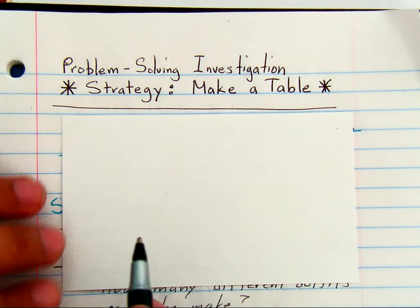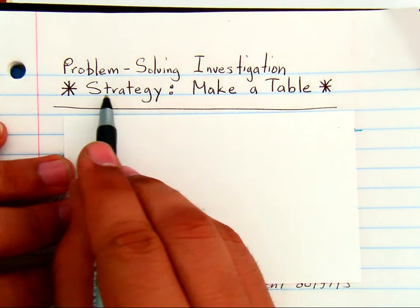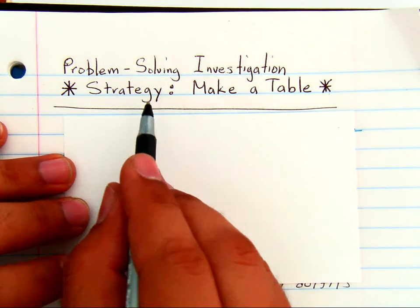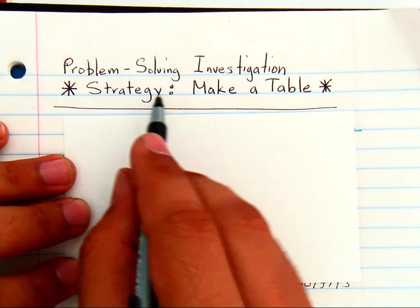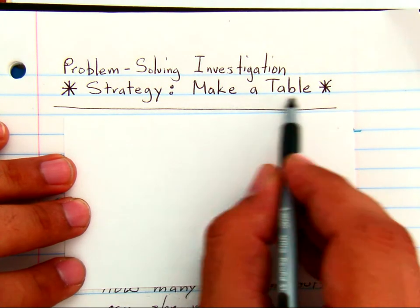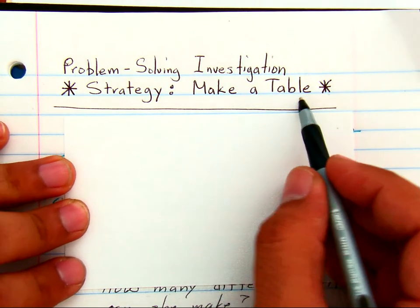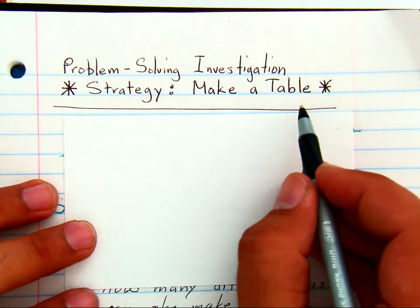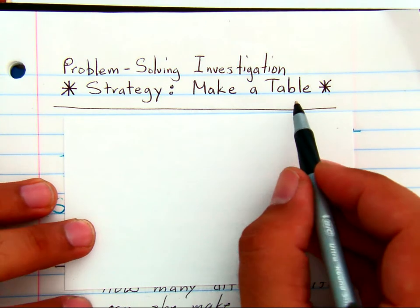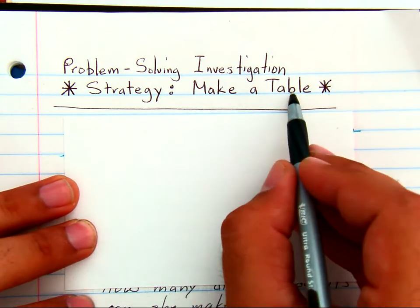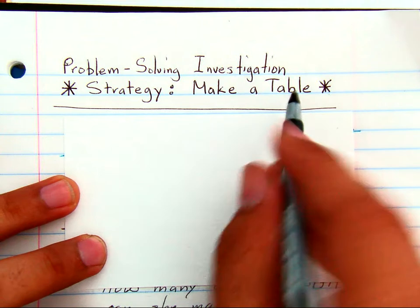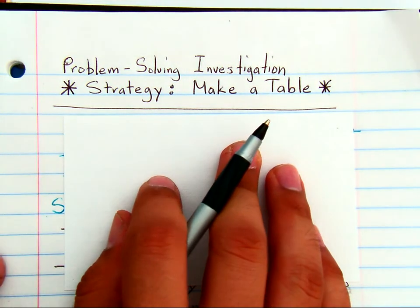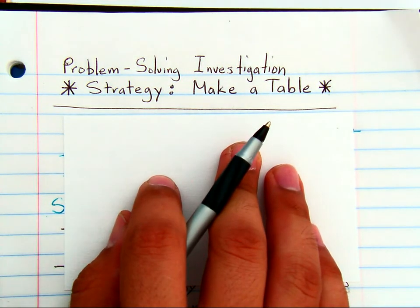It involves word problems, and a good strategy for solving a particular type of word problem is to make a table. When I show you these tables, you're going to say that looks a lot like an array. And you're right, it does. When we're learning about multiplication, making a table is very similar to making an array, but it's great for a particular type of word problem.